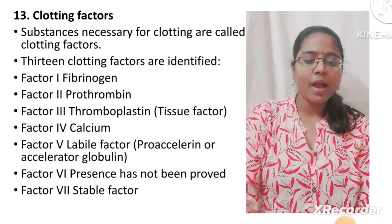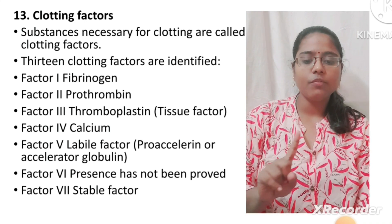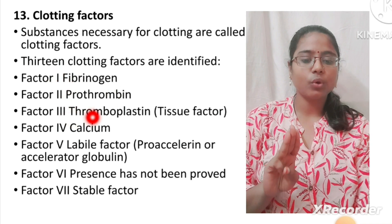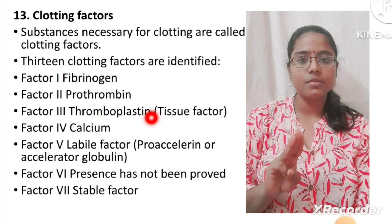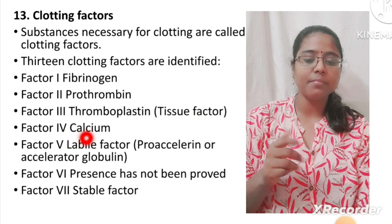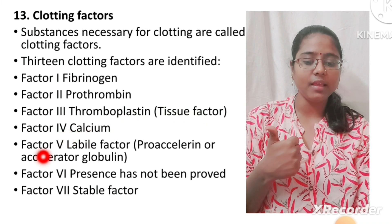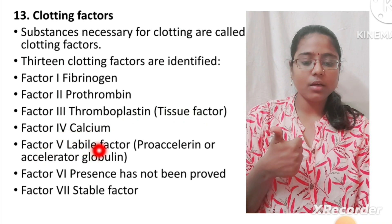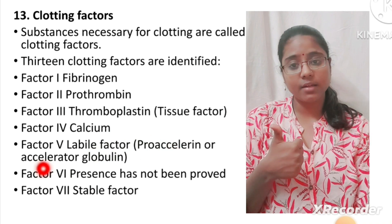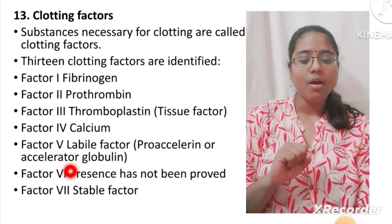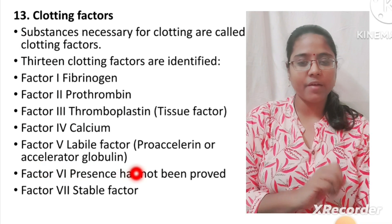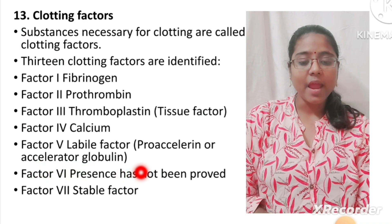There is a name for each factor. Factor 1: fibrinogen. Factor 2: prothrombin. Factor 3: thromboplastin, which is also called as tissue factor. Factor 4: calcium. Factor 5: labile factor, or pro-accelerin, or accelerator globulin. Factor 6 does not have a specific name — it is just factor 6.